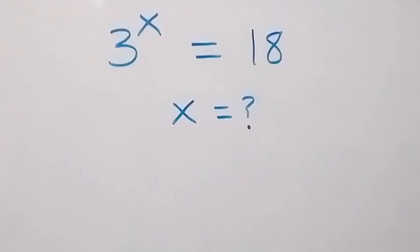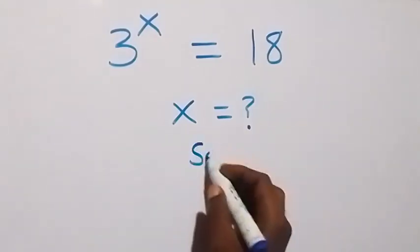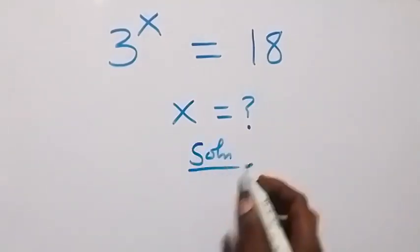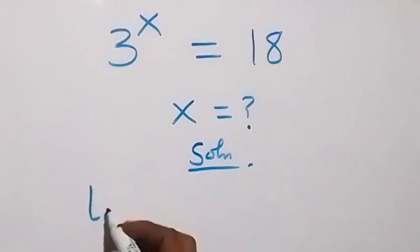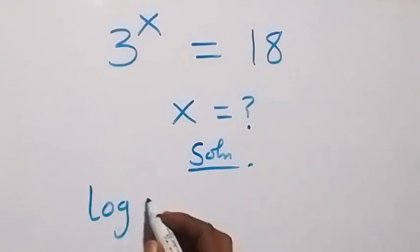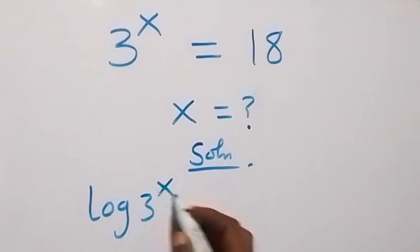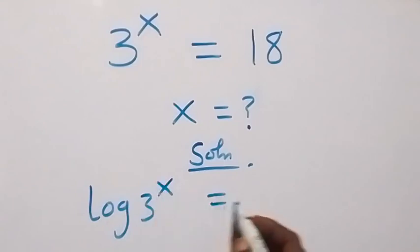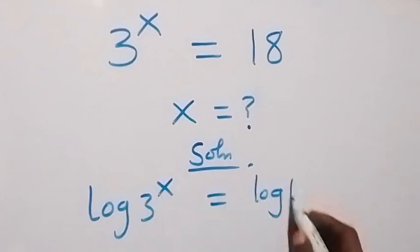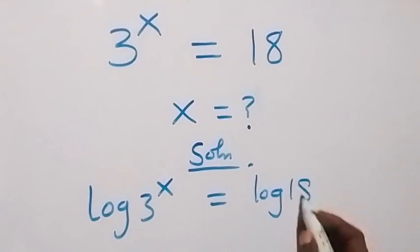Hello, you are welcome. We are going to solve for x in this exponential equation. From here, what is given, we can take the log on both sides and this becomes log 3 raised to power x equals to log 18 on this side.